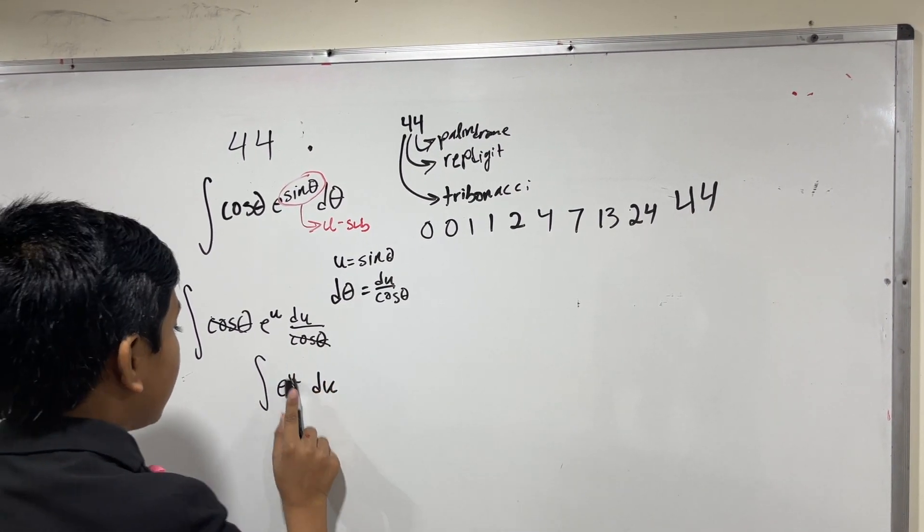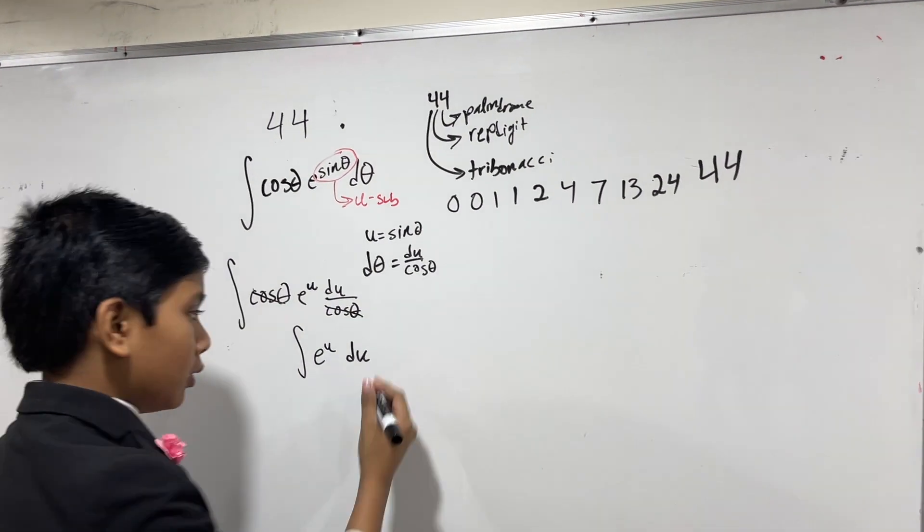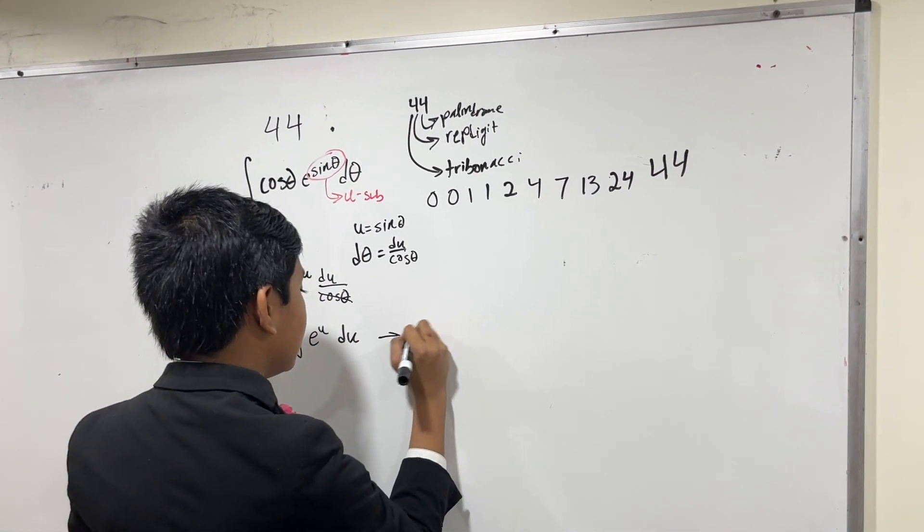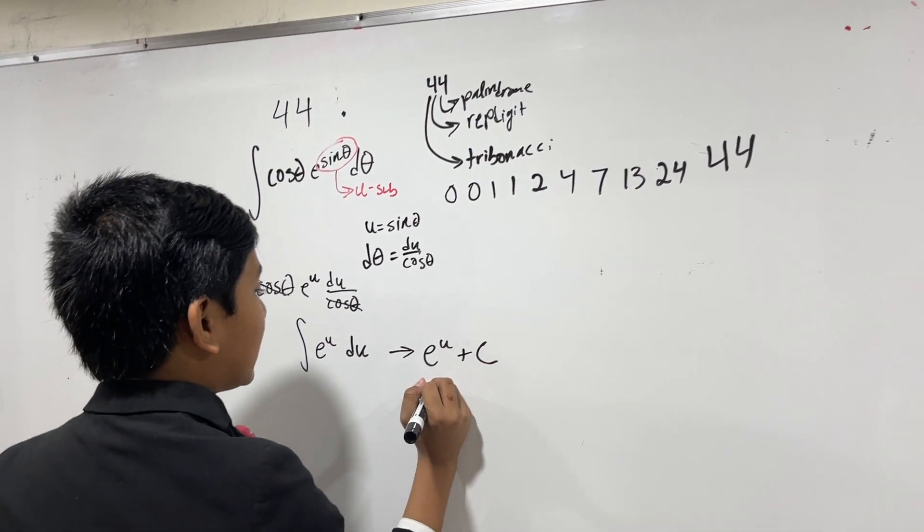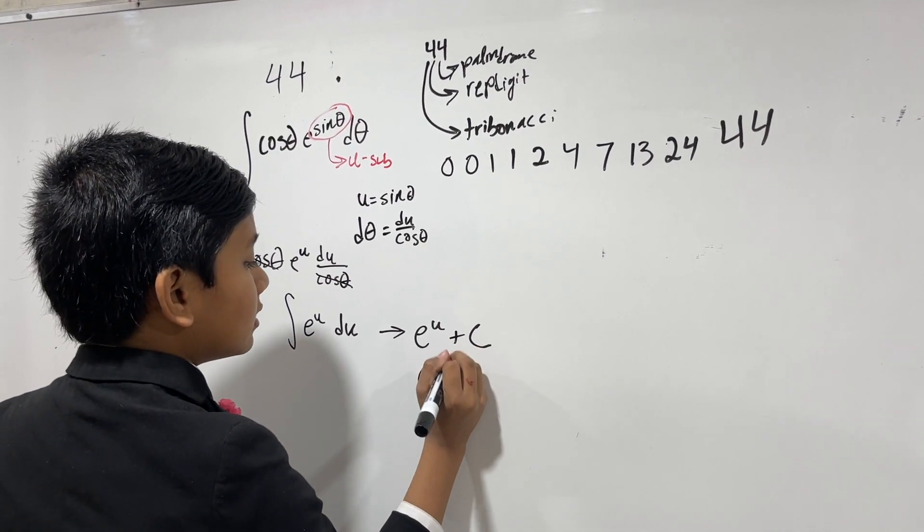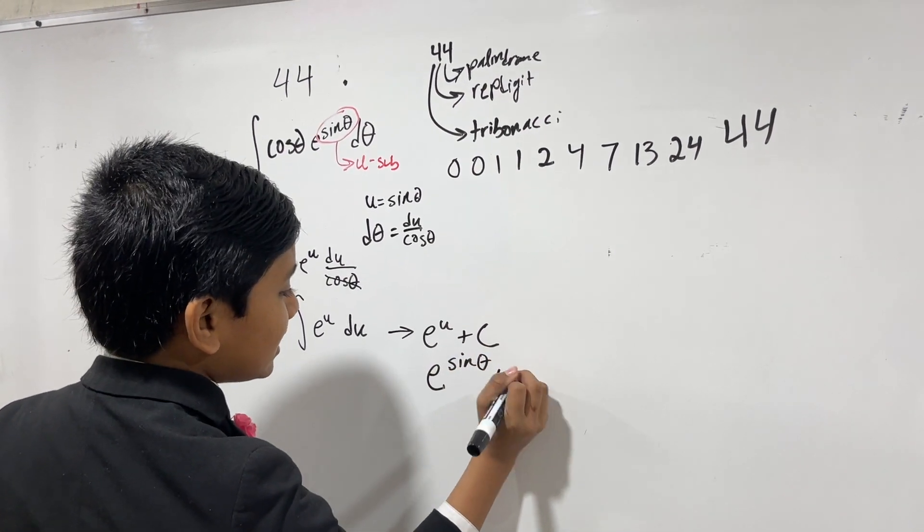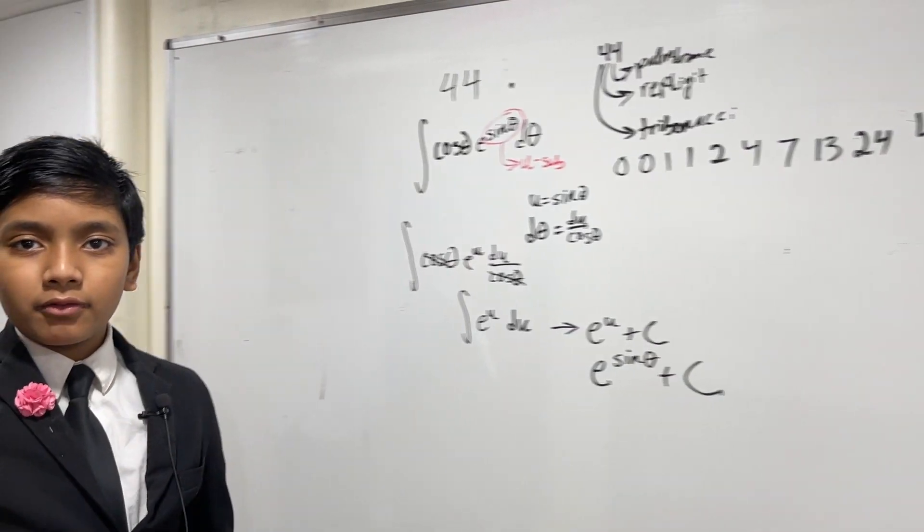And now, integrating as if u were the variable, we simply get e to the u plus c. And now, un-subbing, we get e to the sine theta plus c. That's it. Thank you, everybody, for watching, and we'll see you in the next one. Bye.